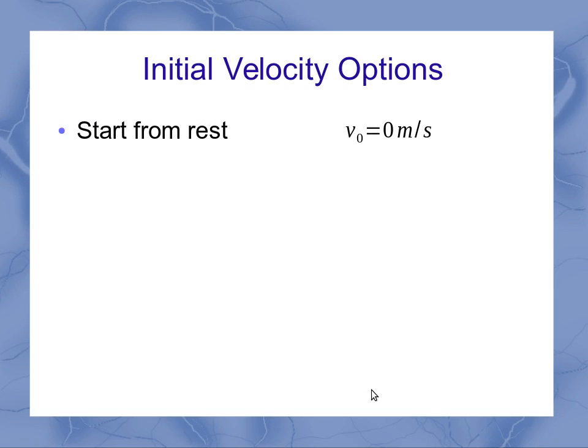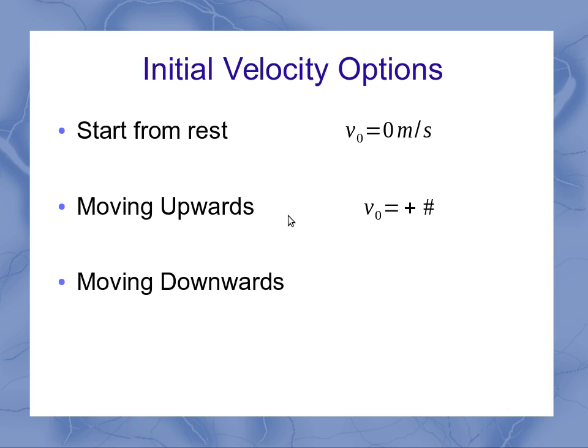In our introduction we only covered starting from rest, or if you just let go or drop something. But you could also start moving upwards, and this is where your initial velocity is any positive number. If you toss something up in the air, as soon as it leaves your hand it's got an upward velocity. Or you could toss it downwards, which means the initial velocity as soon as you let go of it is some negative number.